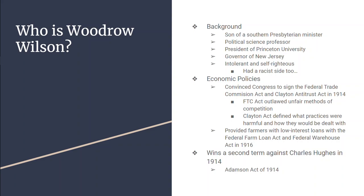In 1916, he wins a second term against Charles Hughes, and it's a 49% to 46% victory — a lot closer.